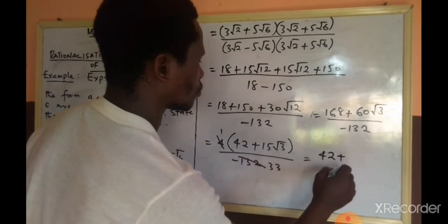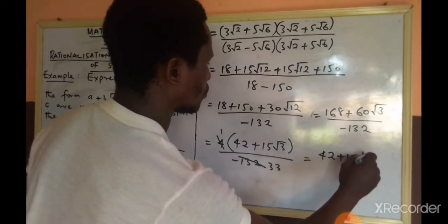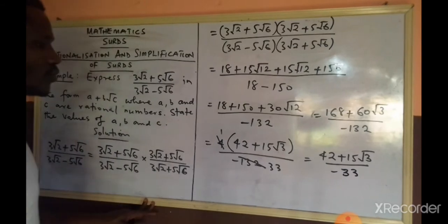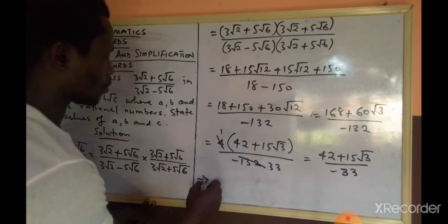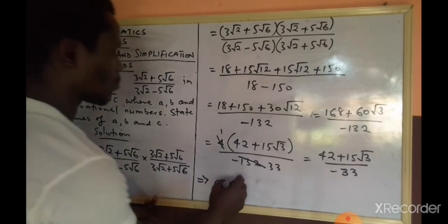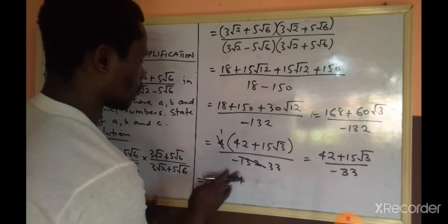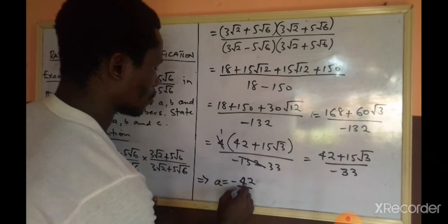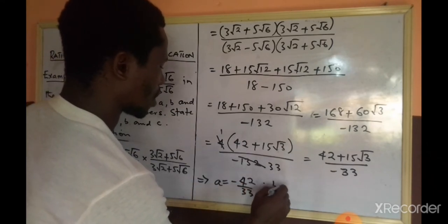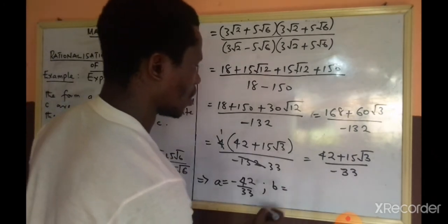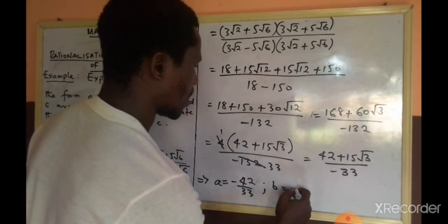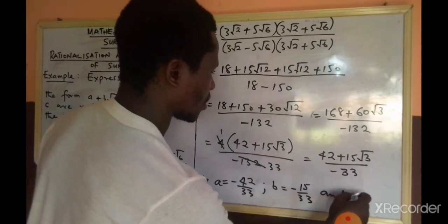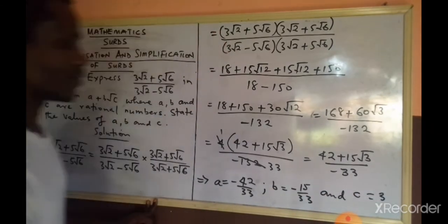It therefore implies that our A is -42 over 33, our B is -15 over 33, and our C is equal to 3.